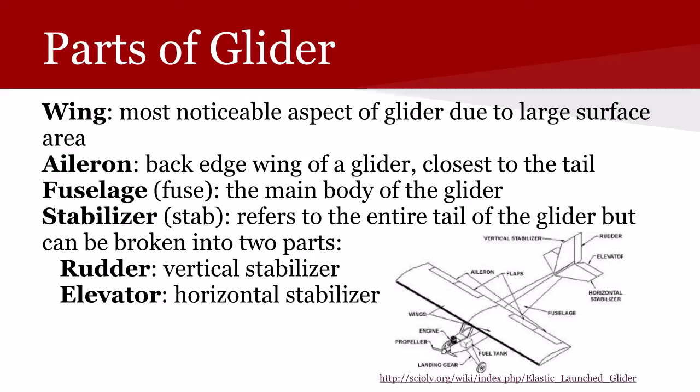The next part is the fuselage, or the fuse — that's just the main body of the glider. That's the part that during your soft and hard launches, you're going to be holding on to for your launch. The next part is the stabilizer, also referred to as the stab — for the layperson, simply the tail. This refers to the entire tail of the glider, but it is broken down into two important parts: the rudder, going up and down, is a vertical stabilizer, and perpendicular to that is the elevator, which is a horizontal stabilizer.